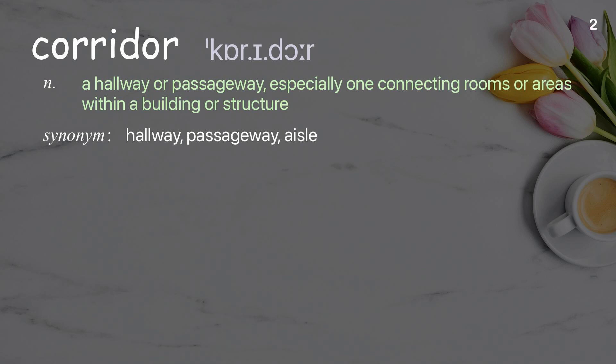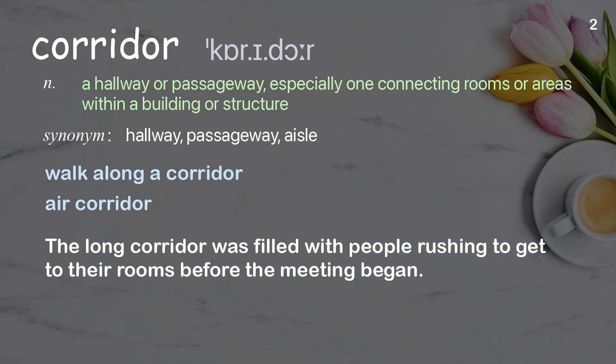She shuffled the cards before dealing them to the players. Corridor: a hallway or passageway, especially one connecting rooms or areas within a building or structure. Examples: walk along a corridor, air corridor.